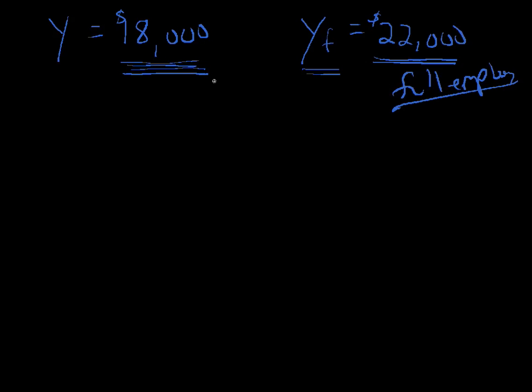And this is where the Keynesian model comes into place. Keynes said we can be stuck here at an equilibrium that's below full employment. And this gap of 22,000, which is full employment, minus 18,000, which is where we're actually at. There's a gap of 4,000. This is the GDP gap.